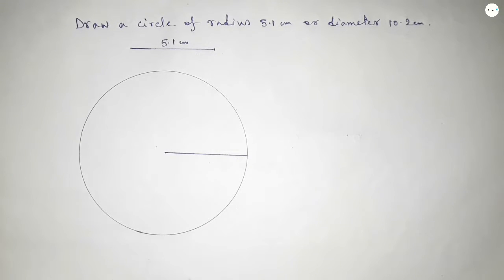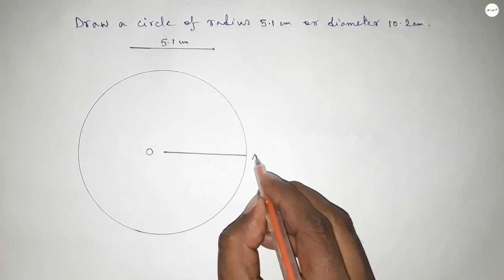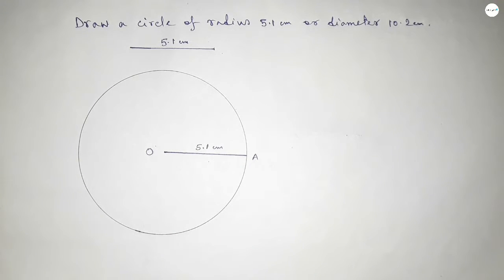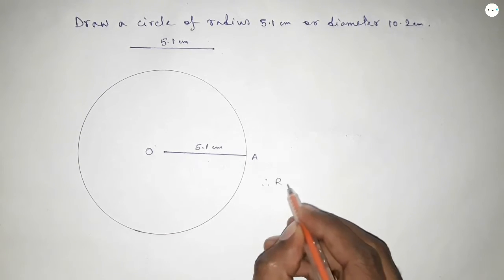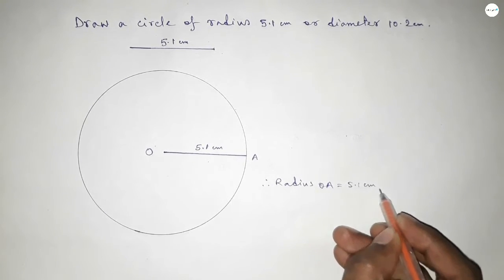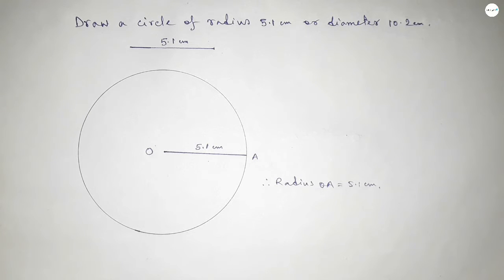And this is center O and here A, so radius OA equals 5.1 centimeter. Therefore radius OA equals 5.1 centimeter. That's all, thanks for watching. If this video is helpful to you, then please share it with your friend.